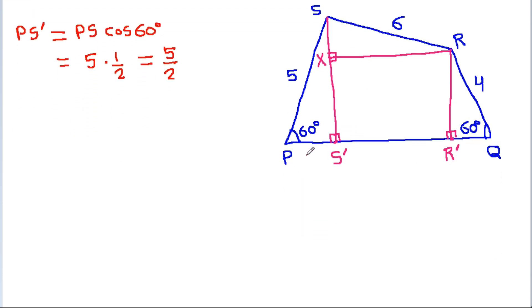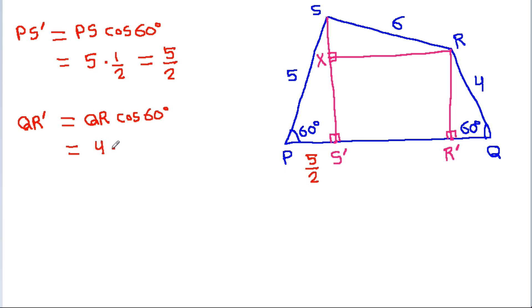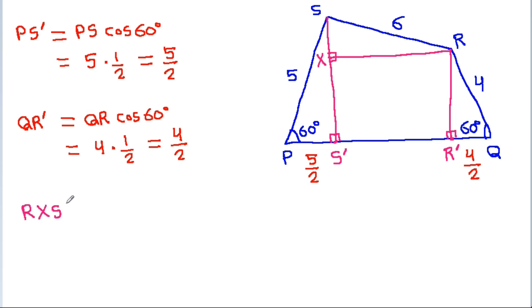PS' is 5/2. And QR' will be equal to QR cos 60 degrees, and QR is 4 and cos 60 degrees is 1/2, so QR' is 4/2 = 2. The shape S'XRR' is a rectangle.